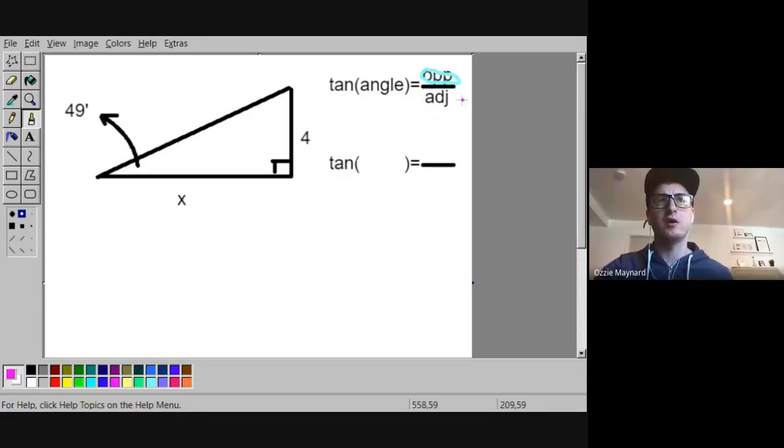We need to recognize from our triangle which side is opposite and which side is adjacent. In this case, opposite of our angle is going to be across from it. So if our given angle is 49 degrees, opposite of that is going to be the 4. The 4 is on top, while the adjacent side is the side that is right next to our angle, which is x.